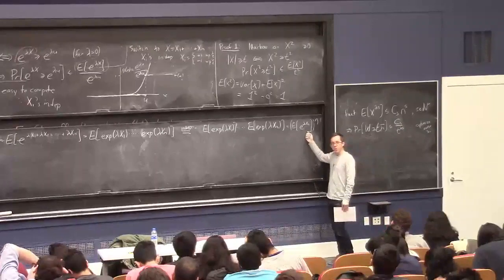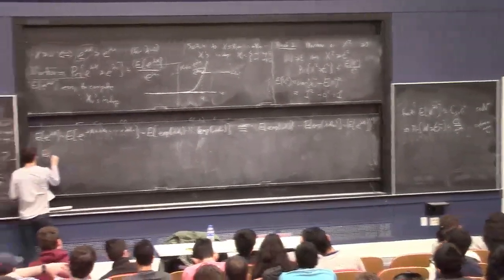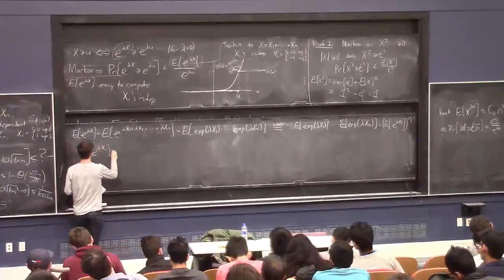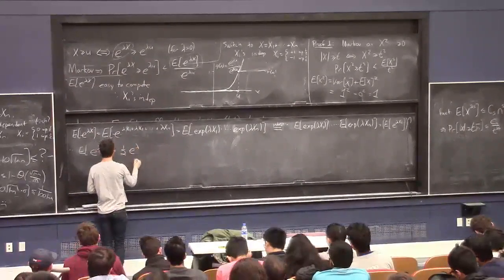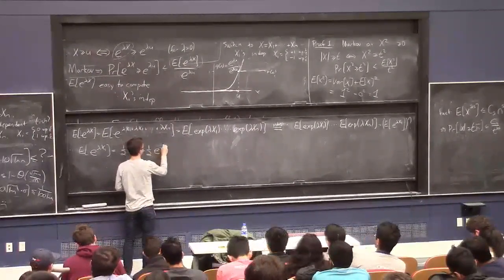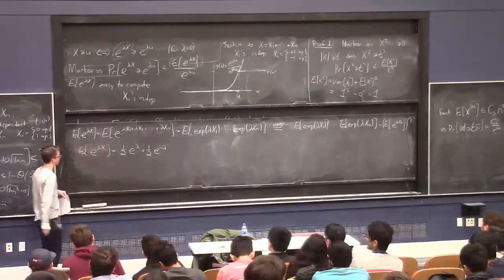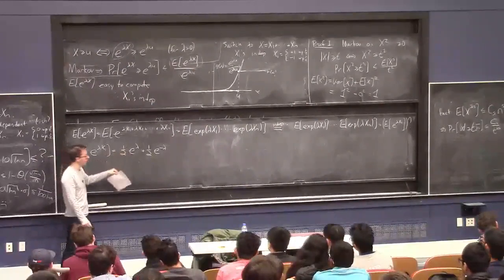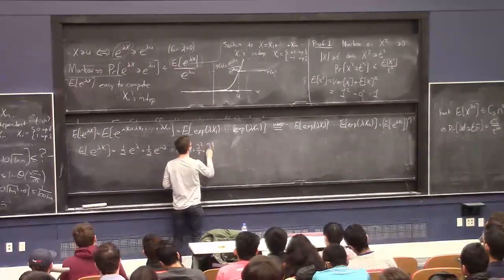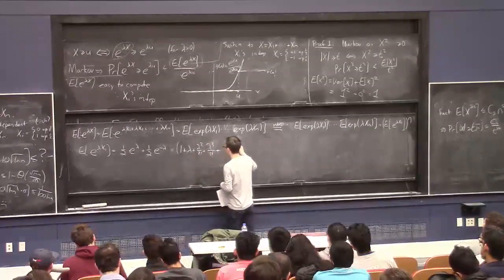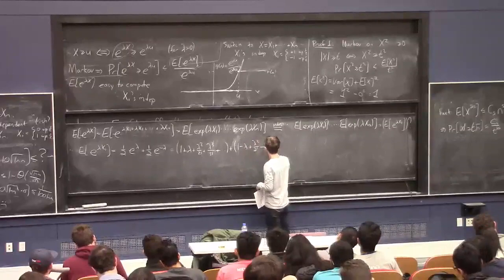This is E[e^{lambda x1}] times ... times E[e^{lambda xn}]. Since all the xi's have the same distribution, this is just E[e^{lambda x1}] to the power of n. Now let's explicitly compute E[e^{lambda x1}]. Half the time x1 is 1, giving half e to the lambda; half the time it's minus 1, giving half e to the minus lambda.